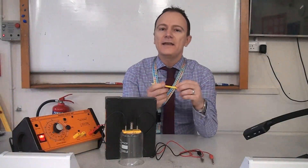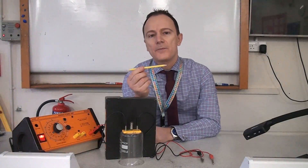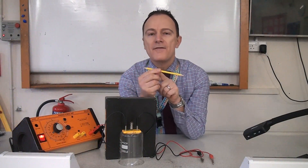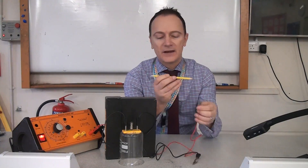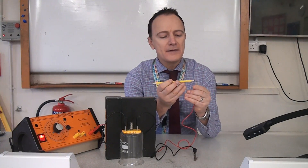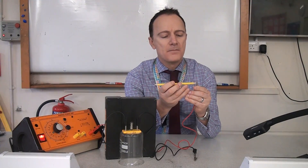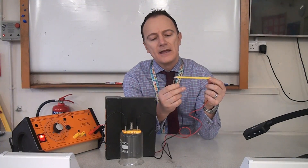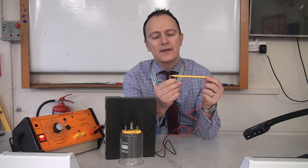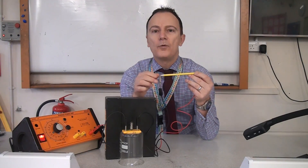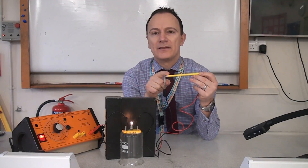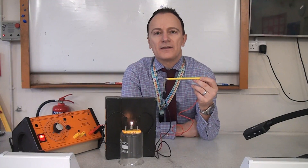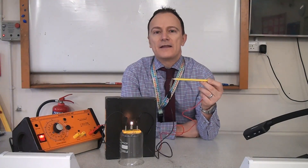Hi everyone. As you can see, I've got a pencil that I've sharpened at both ends so that the graphite going down the middle of the pencil pokes out at each end. I'm going to connect it to an electricity supply — don't try this at home. And when I very carefully connect it to the graphite sticking out at the ends, you can see that the bulb lights up, which shows that the graphite is conducting electricity down the middle of the pencil. In this video, we're going to see why graphite conducts electricity by looking at some giant covalent molecules.